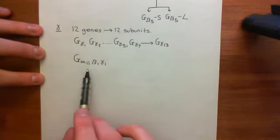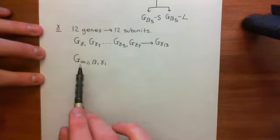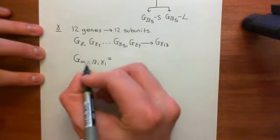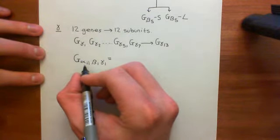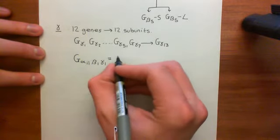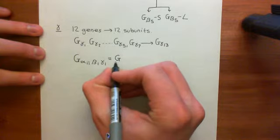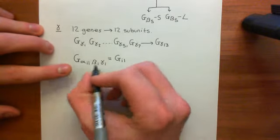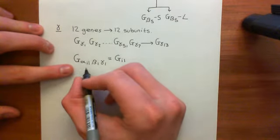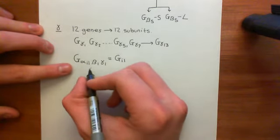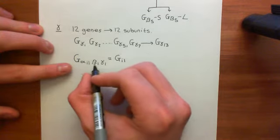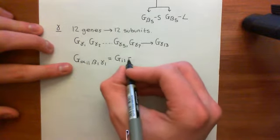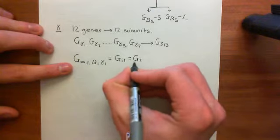People hardly ever actually know this sort of information. Usually they don't have a clue what the beta and gamma subunits specifically are. It's rare that they even know exactly which alpha subunit they're using. If they do know the alpha subunit, they would label the heterotrimeric G protein by it — so they might call this a GI1. However, alpha-I1, alpha-I2, and alpha-I3 almost do identical things, and their pharmacological profile — how drugs interact with them — is almost identical. So often people just put GI to mean it's one of them.